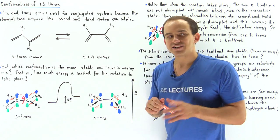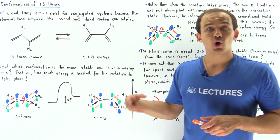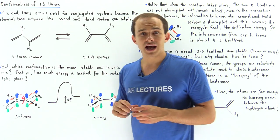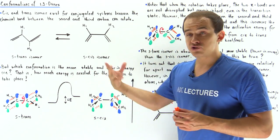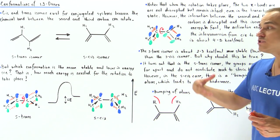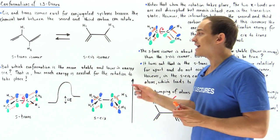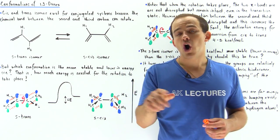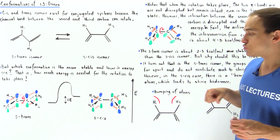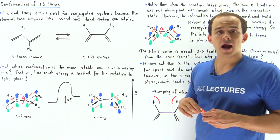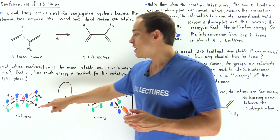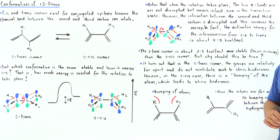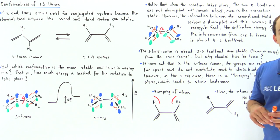Just like regular monoalkenes, 1,3-dialkenes — specifically conjugated systems — have both S-trans and S-cis isomers. The S-trans isomers are lower in energy compared to the S-cis isomers as a result of no steric hindrance between the H atoms, as shown in this diagram.